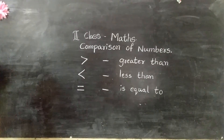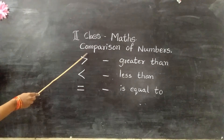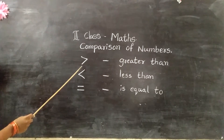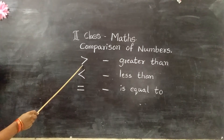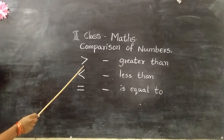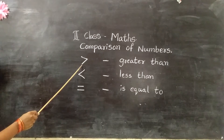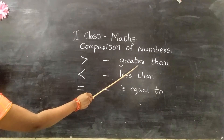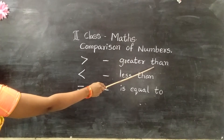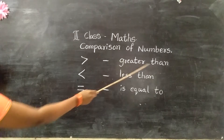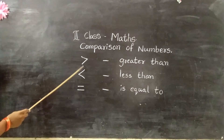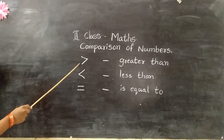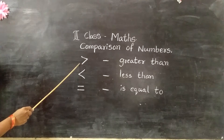Okay children, all of you look at the word comparison of numbers. We use three symbols here. This is the greater than symbol — G-R-E-A-T-E-R, T-H-A-N, greater than. What is this symbol children? Greater than.